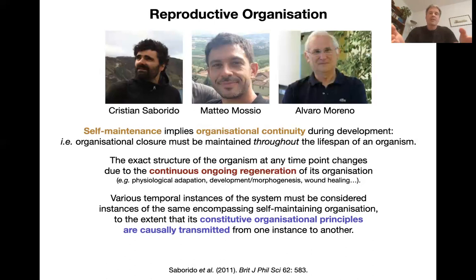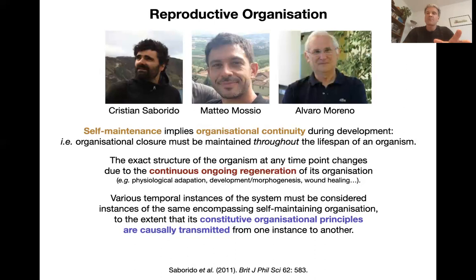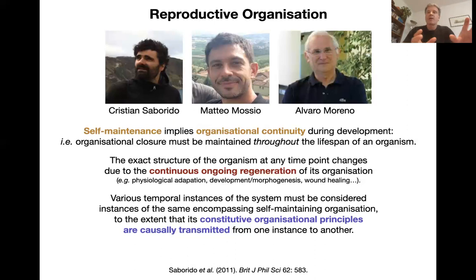Here's a little thought about that. Various temporal instances of the system must be considered instances of the same encompassing self-maintaining organization to the extent — and this is important — that its constitutive organizational principles are actually transmitted from one instance to another. What makes you the same organism as you were when you were two years old is not that you have a certain set of attributes or properties that were maintained, but more because there is a causal continuity between the two-year-old you and the you watching this video right now. Organismal identity is much more a question about the causal continuity of what connects you to your two-year-old persona.